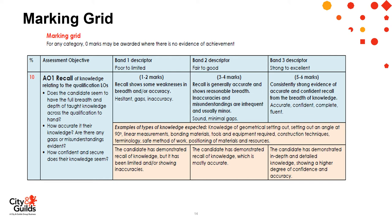For AO1 recall of knowledge, based on the evidence seen and recorded on the performance observation sheet, you must decide which marks to allocate. As it is only basic knowledge, concentrate on the selection of tools, materials, equipment, work process, and health and safety. Then allocate the mark.